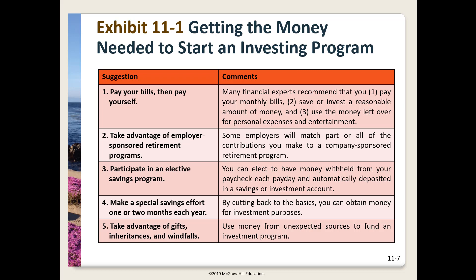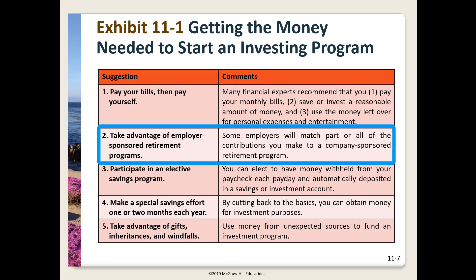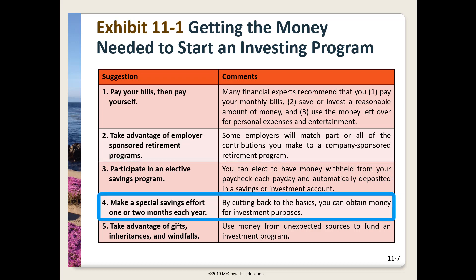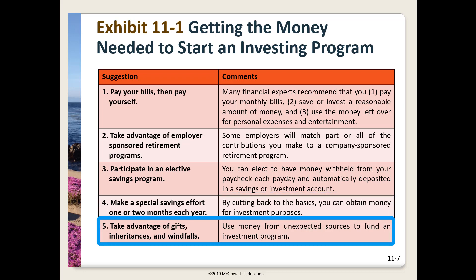This is exhibit 11-1 on page 351 in your text: five steps to finding the money to invest. Number one: pay your bills, then pay yourself. Number two: take advantage of employer-sponsored retirement programs like a 401k. Number three: have money automatically saved — deducted from your check or transferred from your bank account. Number four: once or twice a year make a special savings effort. If you get a bonus, invest the majority. Same with gifts and inheritances — save and invest most of it.